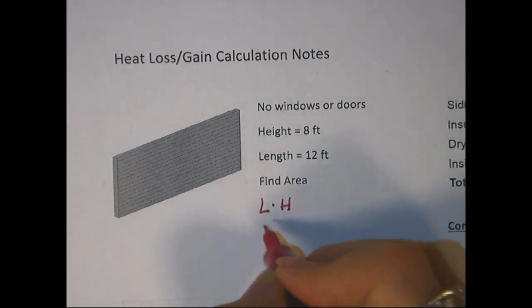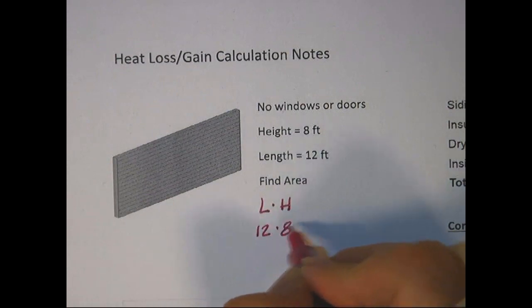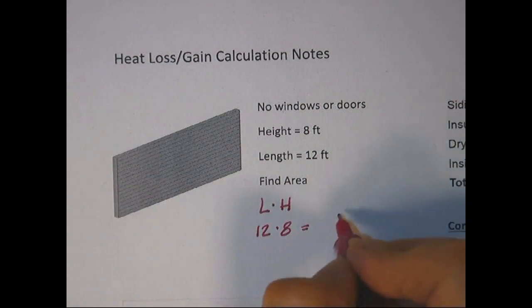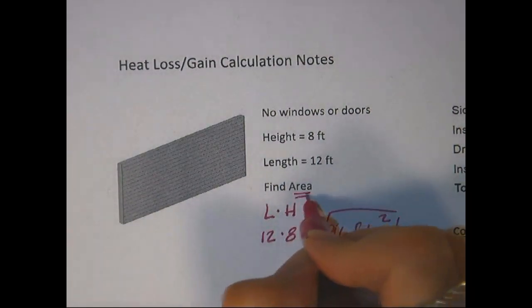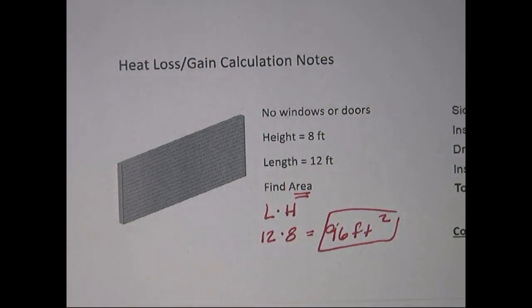So length and height is 12 times 8. Feet times feet gives us feet squared, which is 96 feet squared. So first we have to find the area of each wall that we need, or if we're going to look for a window, we'd also find the area of the windows or the doors or whatever.